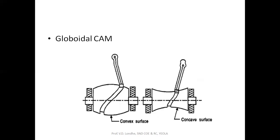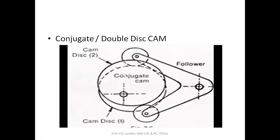Next is the global CAM. As the name indicates, it has a spherical surface with two types: a convex surface converging toward the center and a concave surface going away from the center. The followers move through a slot on this surface. This type of CAM is rarely used in practice. Finally, the conjugate or double disc CAM has two discs — cam disc 1 and cam disc 2 — and the FOLLOWER is in contact with both discs simultaneously.